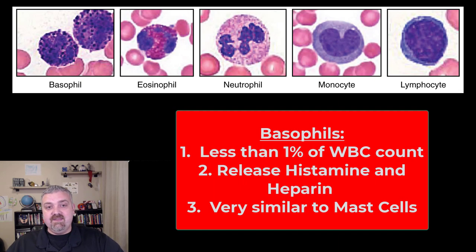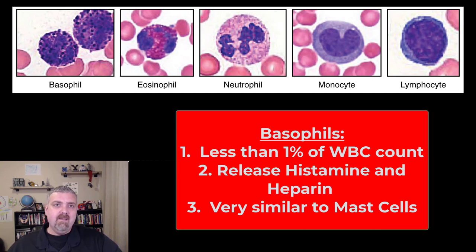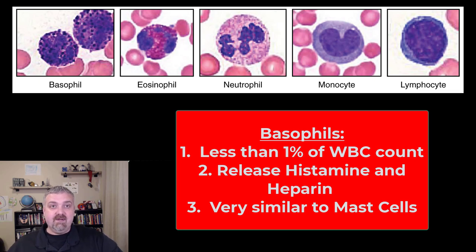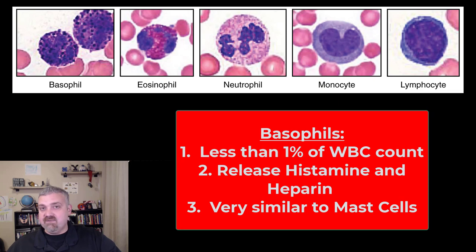Next we have basophils. Basophils and another type of cell called mast cells used to be thought of as the same cell, but they come from different places and they do the same thing. Both mast cells and basophils release histamine and heparin. They're very rare — usually less than 1% of all your white blood cells — but they play a big role in the inflammatory response because they dump histamine, which causes an increase in fluid accumulation and inflammation, and heparin, which is a blood thinner. With basophils, think inflammatory response. Mast cells are not the same cell but they do the same thing.